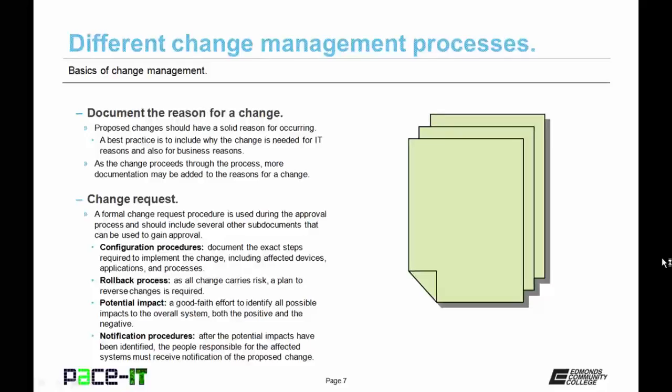The change request should also include a rollback process. As all change carries risk, a plan to reverse changes is required in order to gain approval. Then there are potential impact documents. The potential impact documents are a good-faith effort to identify all possible impacts to the overall system, both the positive and the negative.